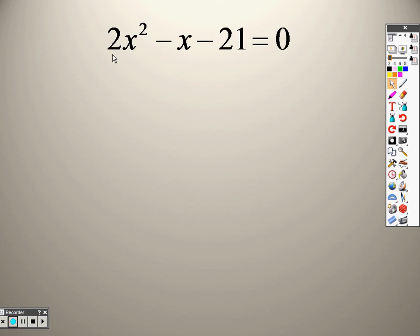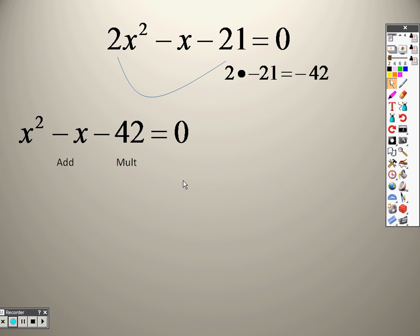Trying out another one. 2 times negative 21, we slide and divide, that gives us a negative 42. So, I get x squared minus x minus 42. So, when we're doing this, what two numbers multiply to give you negative 42 that add to give you negative 1?